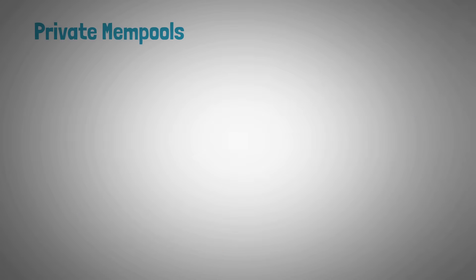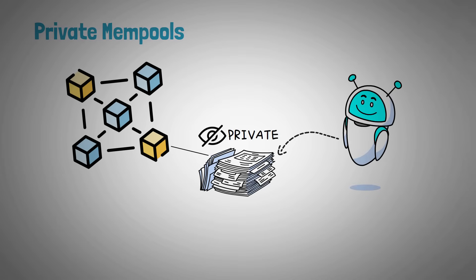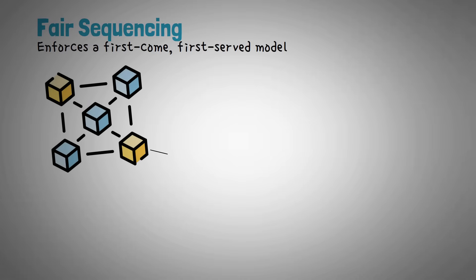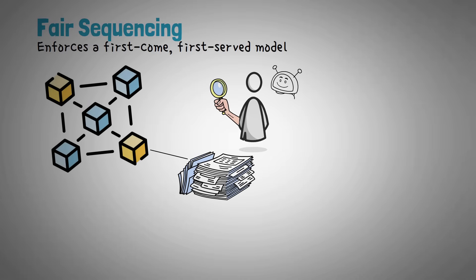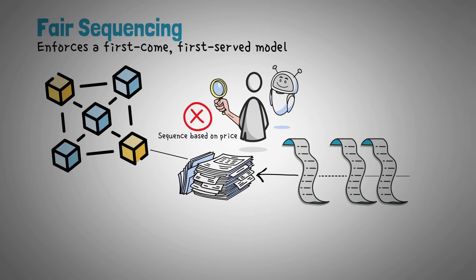First up is private mempools. One common solution is to have a private mempool, which keeps transactions hidden until they're confirmed, preventing bots from front-running. But this doesn't stop the validators from performing MEV themselves. So what about solutions that limit validators' actions too? Next is fair sequencing. Fair sequencing enforces a first-come, first-served model, eliminating the ability to reorder transactions altogether. Instead of letting validators or bots decide the order based on who pays the most, fair sequencing enforces a more neutral approach, often by processing transactions in the exact order they were received or by using cryptographic techniques to randomize ordering.